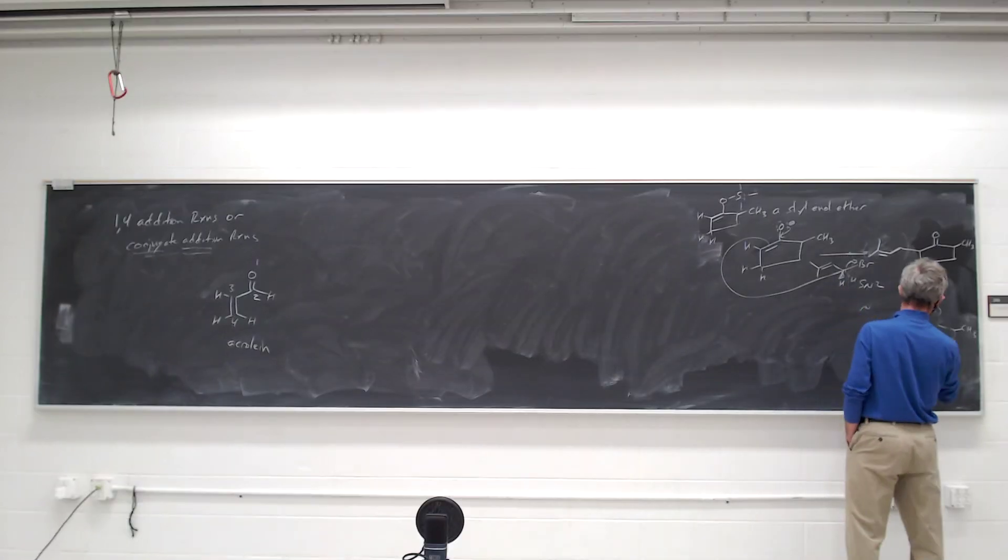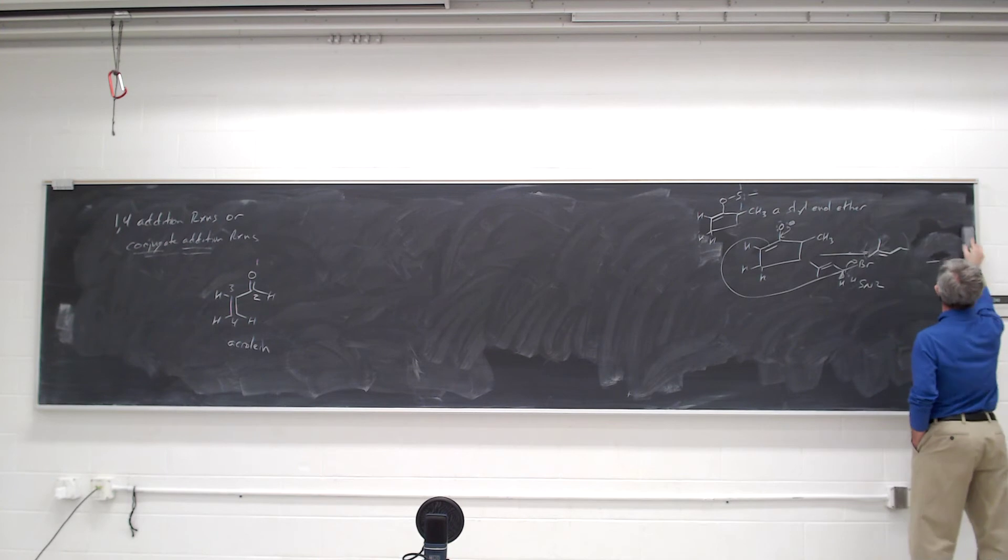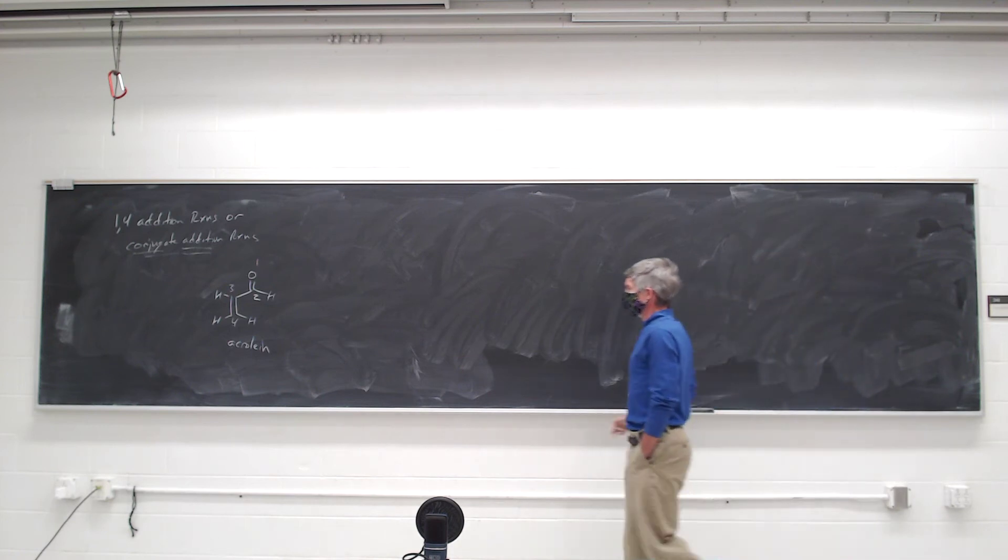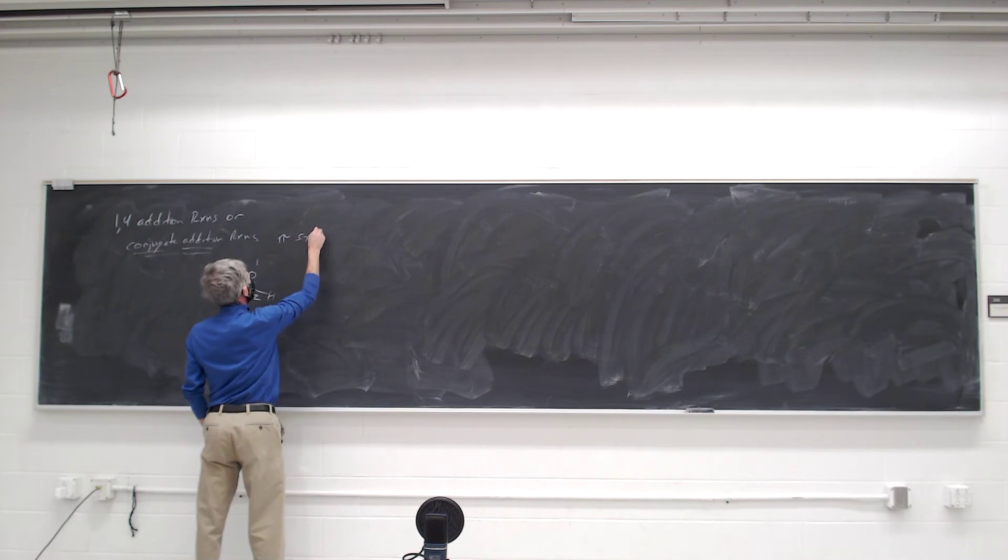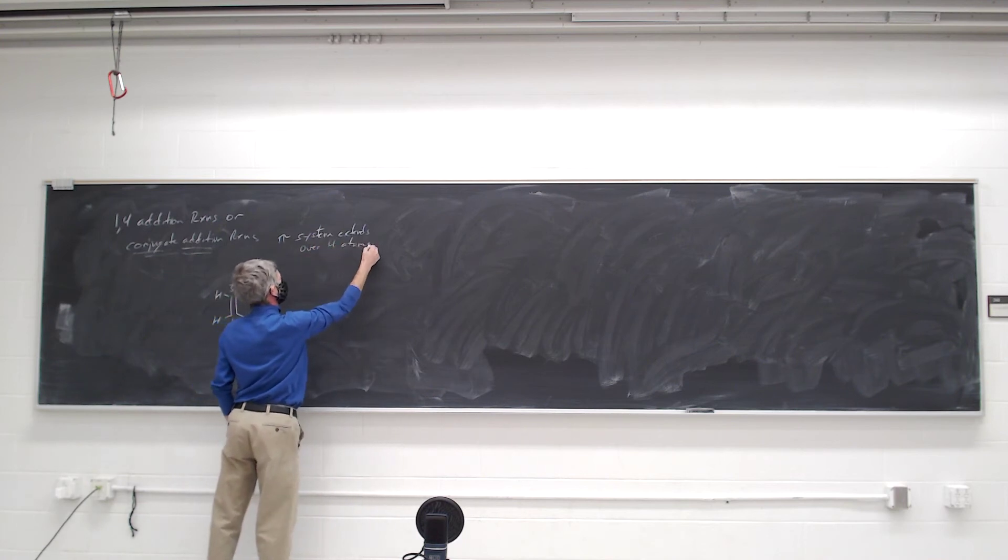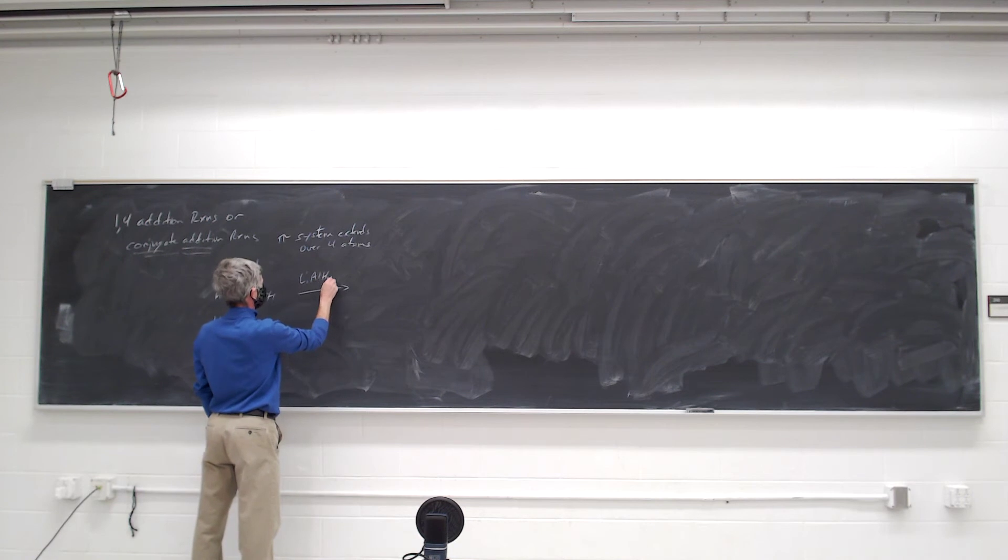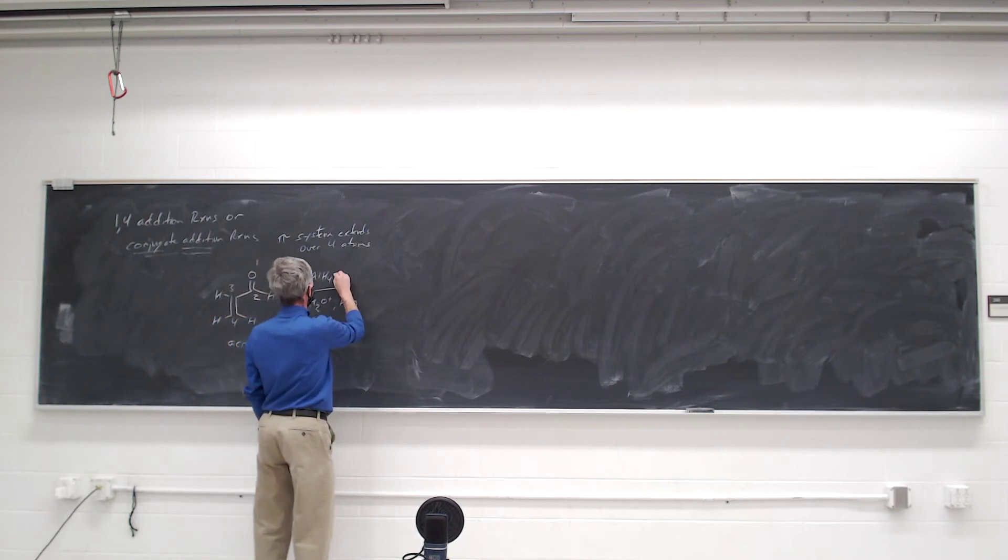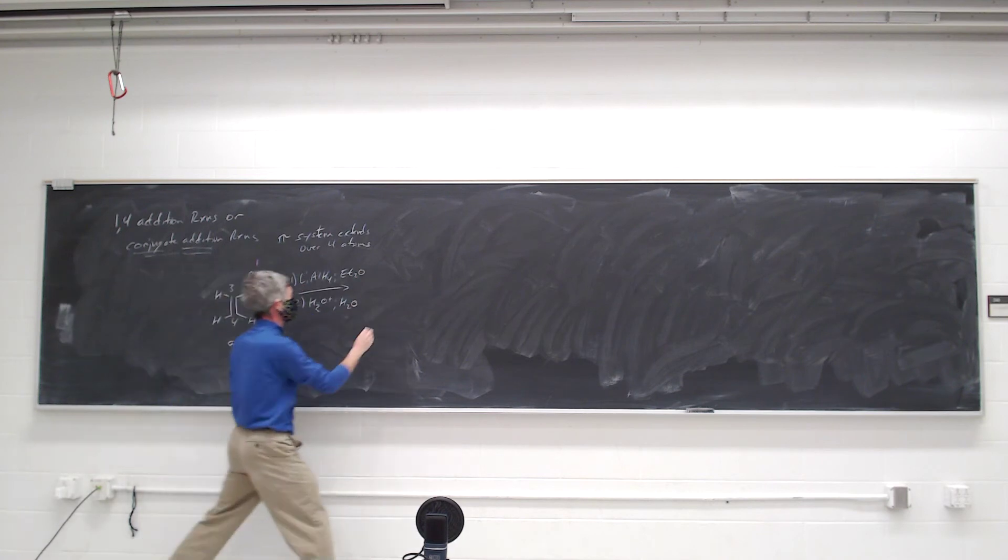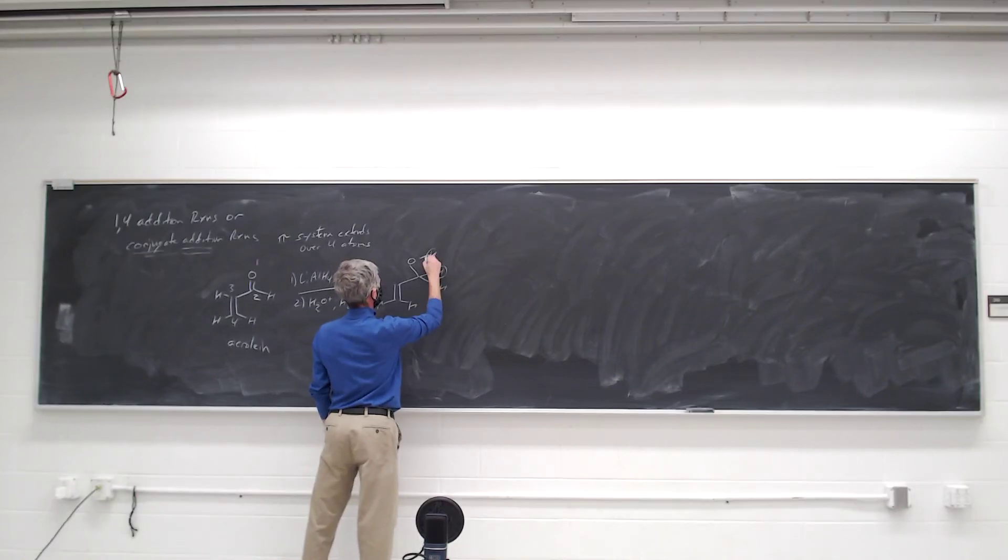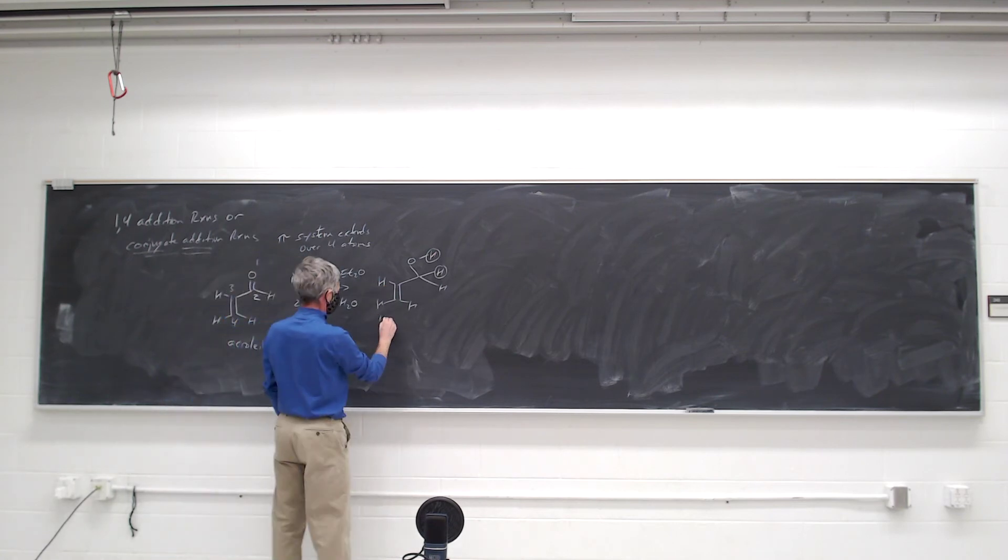Wait, so the oxygen is 1? Yep. Not the carbon? Oxygen is 1. Okay. So it's a pi system that extends over 4 atoms. Oh, okay. We've already seen that you can do a 1,2 addition because lithium aluminum hydride did that. And we added the hydride from the lithium aluminum hydride to the carbon in the 2 position. And we added those protons in a 1,2 sense.